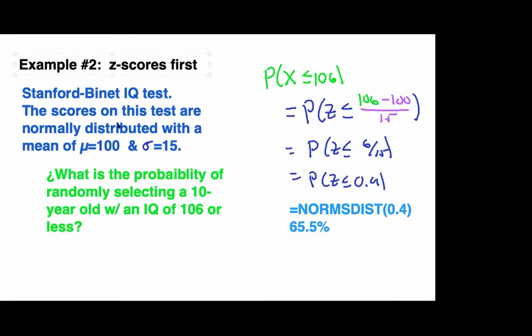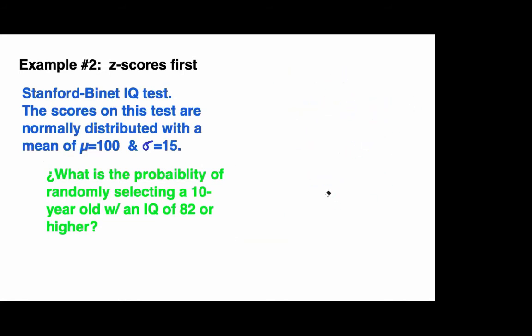Let's work a similar problem, but going in the other direction. We will continue to work with the Stanford-Binet IQ test. Now, let's determine what is the probability of randomly selecting a 10-year-old with an IQ of 82 or higher. P of X greater than or equal to 82. This would be equivalent to finding the probability of a z-score greater than or equal to 82 less 100, all divided by 15. Which is the same as a z-score greater than negative 18 over 15, or z greater than or equal to negative 1.2.